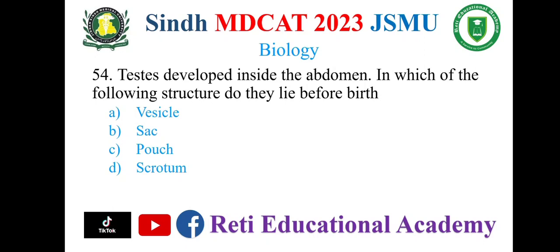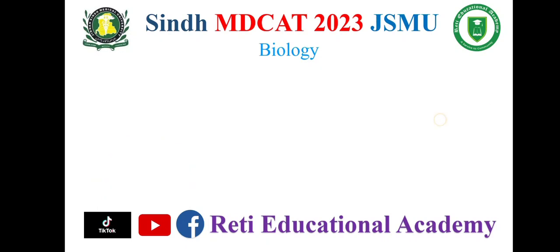Question 54: Testes develop inside the abdomen — in which of the following structures do they lie before birth? A. Vesicle, B. Sac, C. Pouch, D. Scrotum. The correct option is D: Scrotum.